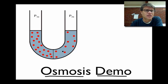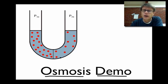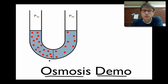Osmosis is simply diffusion, or the movement of water from an area of high water concentration to low water concentration, across a semi-permeable membrane. So what does that mean?